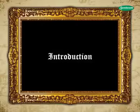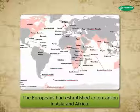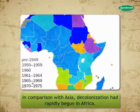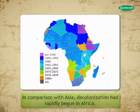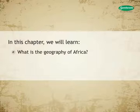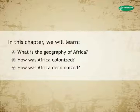The Europeans had established colonization in Asia and Africa. In comparison with Asia, decolonization had rapidly begun in Africa. In this chapter, we will learn about the geographical features of Africa, its colonization and decolonization.